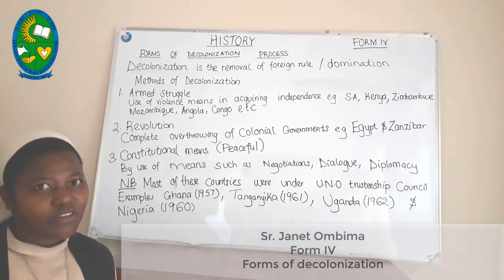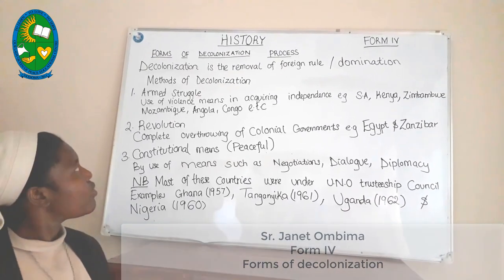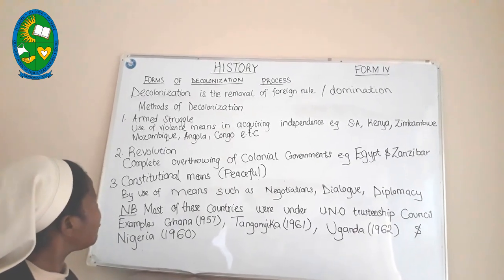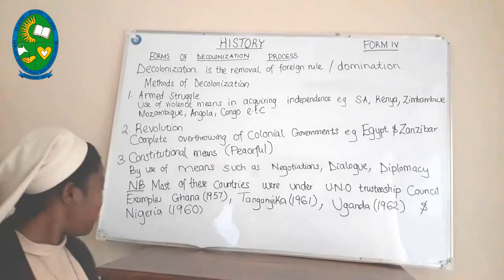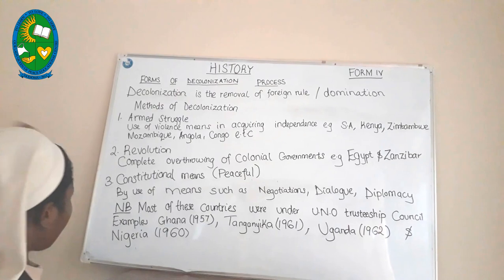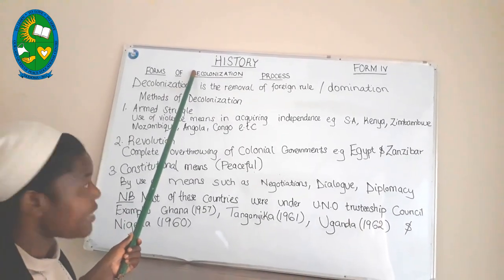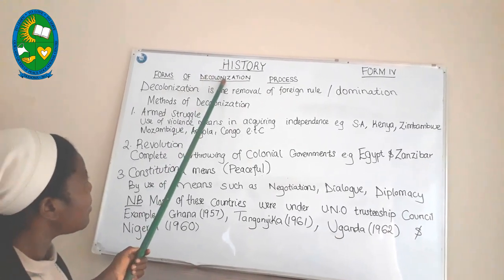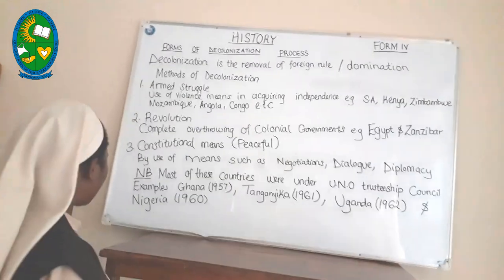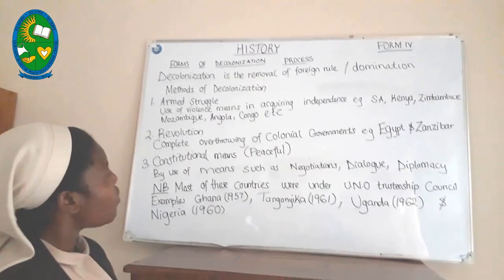My name is Sister Janet Tombima from St. Peter Clever High School. Today I have the privilege to take you through forms of the decolonization process. Decolonization comes from two terms: 'de' meaning removal of something, and 'colonization' referring to the establishment of colonial rule. Therefore, as a whole, decolonization is the removal of foreign rule or foreign domination.